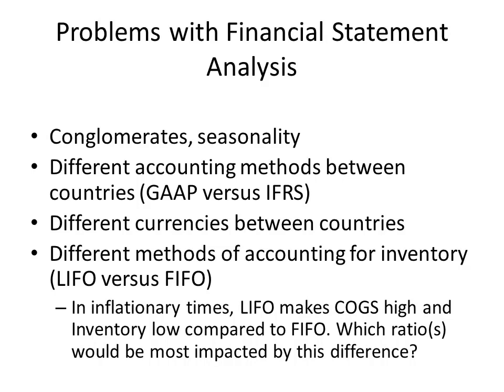Finally, there are different methods of accounting for inventory even within the United States. The IRS allows American companies to account for their inventory either under LIFO — last in, first out — or FIFO — first in, first out. In inflationary times, LIFO will make cost of goods sold higher, because the last item in will have the highest price associated with it. As a result of making cost of goods sold higher, pre-tax income will be lower, which lowers the taxes the firm owes — and this is good for shareholders because taxes represent a real cash flow.